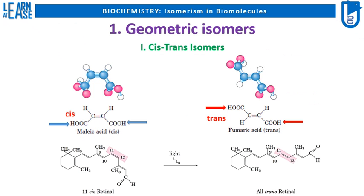An example of a biomolecule showing cis-trans isomerism is retinol, which is a pigment found in eyes responsible for providing vision. Two isomers of retinol possess cis-trans isomerism around the double bond occurring at the 11th position of the molecule, represented by arrows in the image. Vision begins with the photoisomerization of retinol. When the 11-cis retinol chromophore absorbs a photon, it isomerizes from the 11-cis state to the all-trans state.